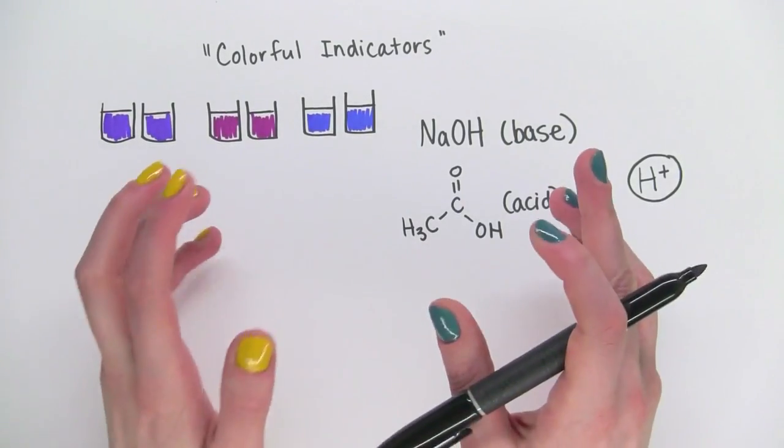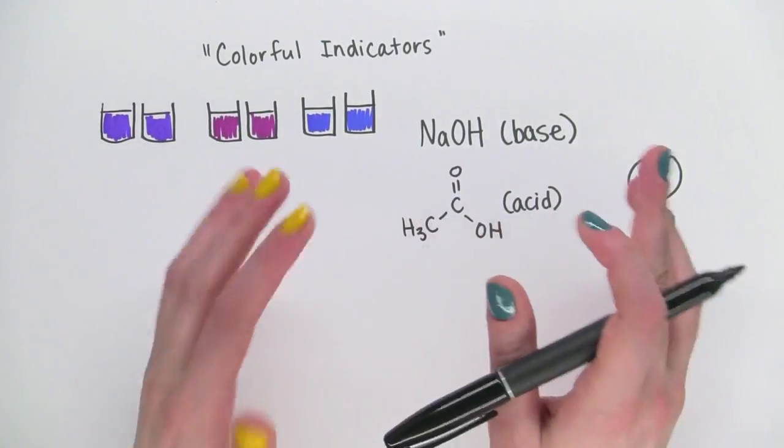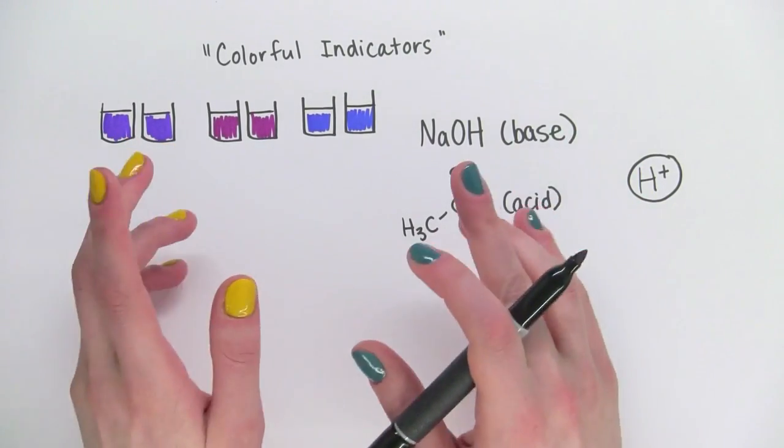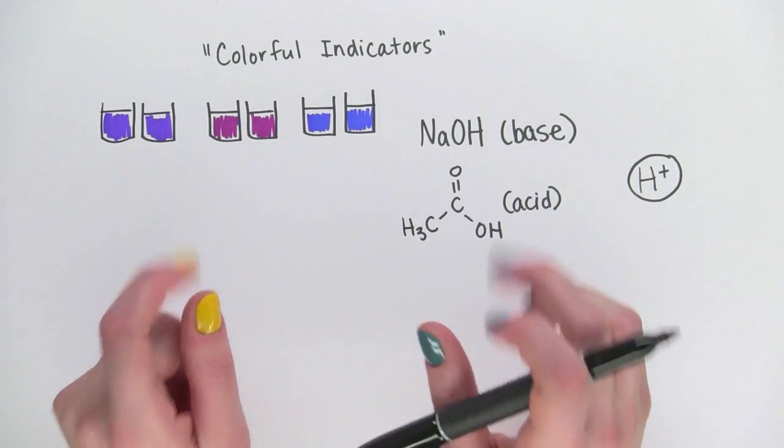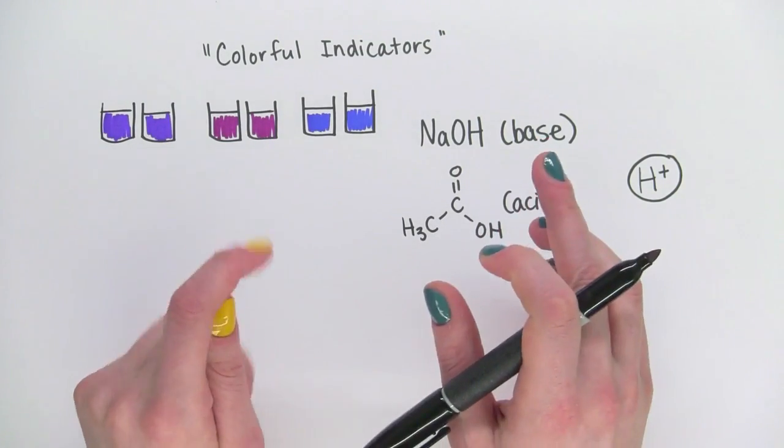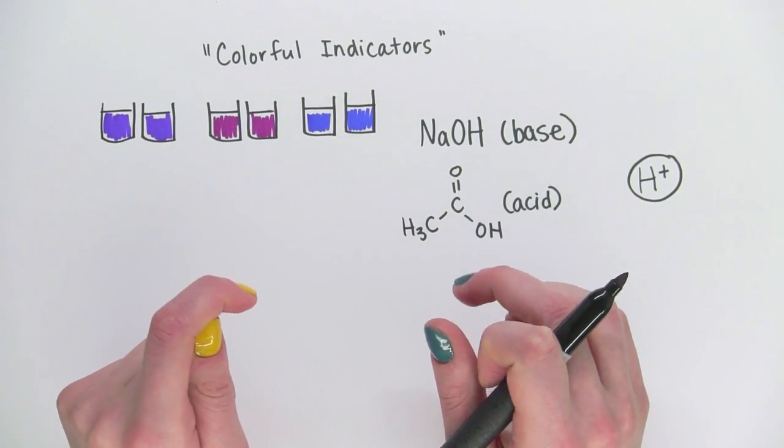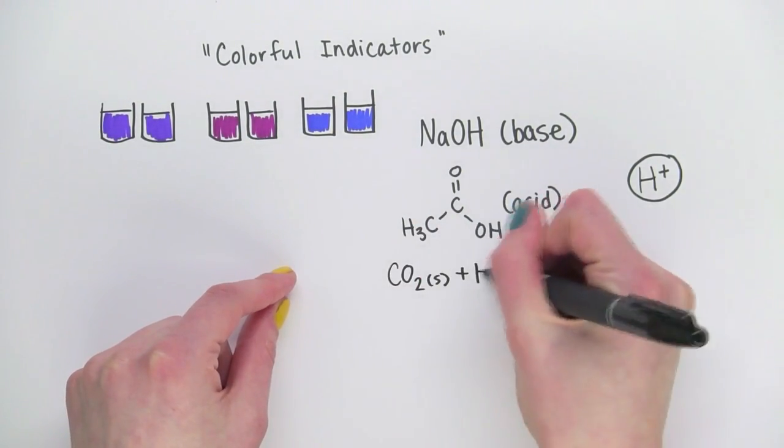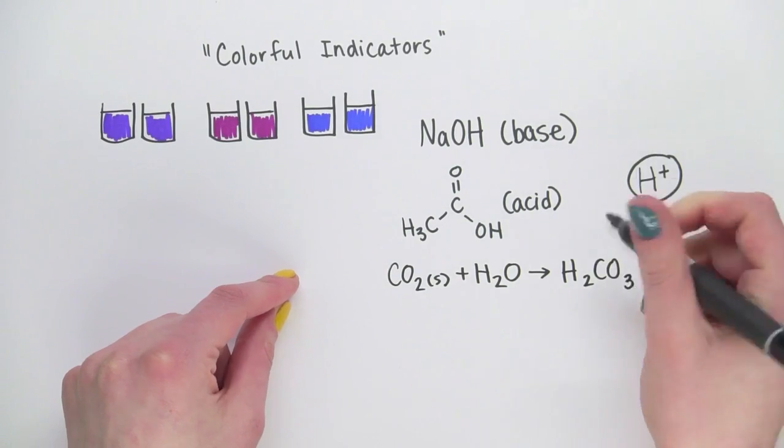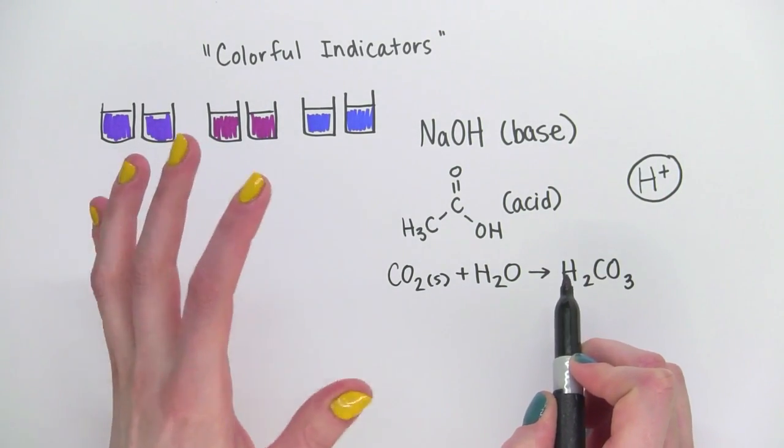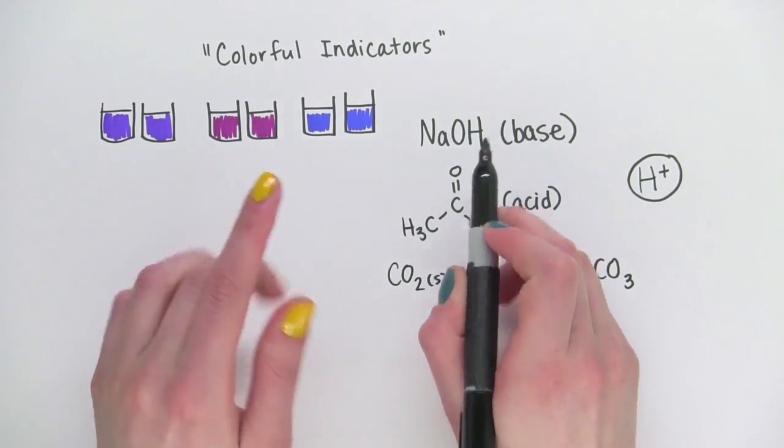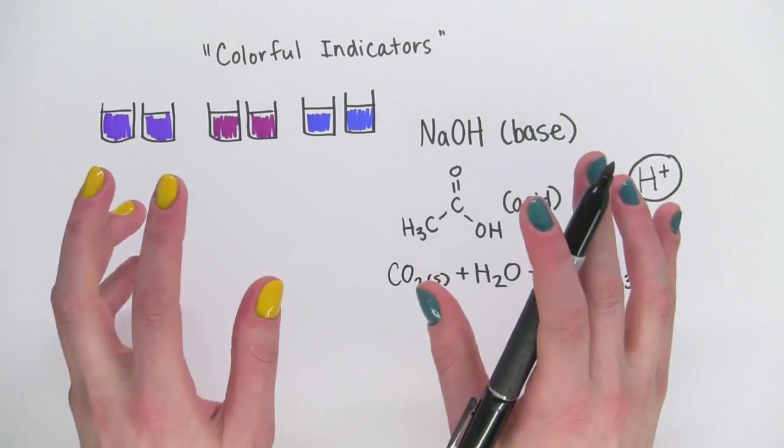But why does adding dry ice change the solution from basic to acidic? Well, dry ice is solid carbon dioxide. When you add it to water, it bubbles, and part of every bubble of carbon dioxide dissolves. When it does, it forms carbonic acid. Let's look at that equation. So there's more and more carbonic acid in the water. And this acid reacts with the sodium hydroxide until there's none left. So the solution becomes acidic.